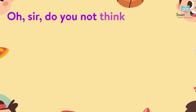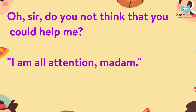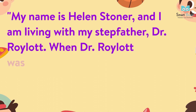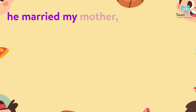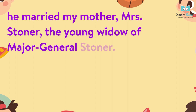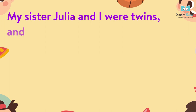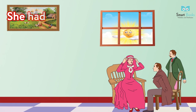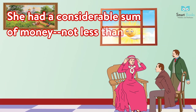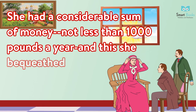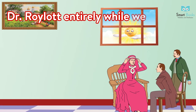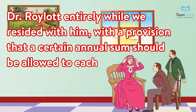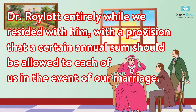'Oh, sir, do you not think that you could help me?' 'I am all attention, madam.' 'My name is Helen Stoner, and I am living with my stepfather, Dr. Roylott. When Dr. Roylott was in India, he married my mother, Mrs. Stoner, the young widow of Major General Stoner. My sister Julia and I were twins, and were only two years old at the time of my mother's remarriage. She had a considerable sum of money, not less than a thousand pounds a year, and this she bequeathed to Dr. Roylott entirely when we resided with him, with a provision that a certain annual sum should be allowed to each of us in the event of our marriage.'